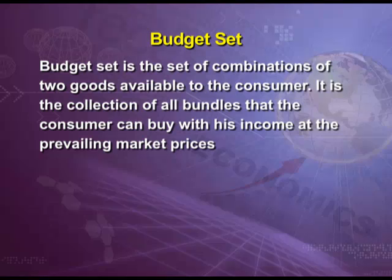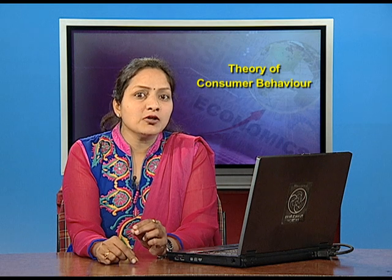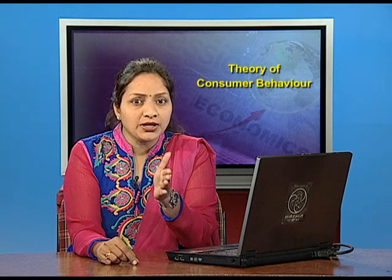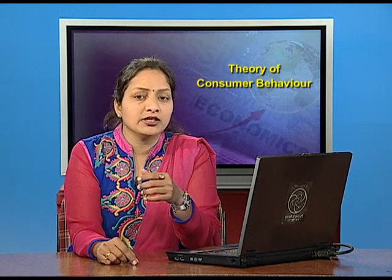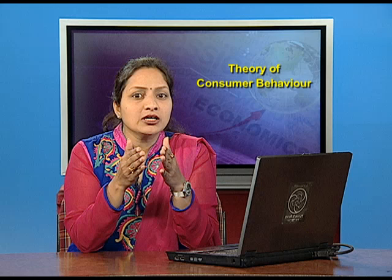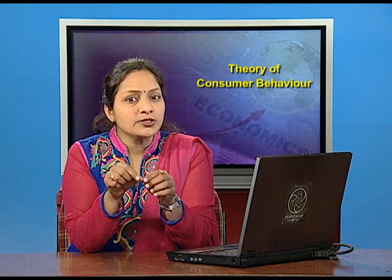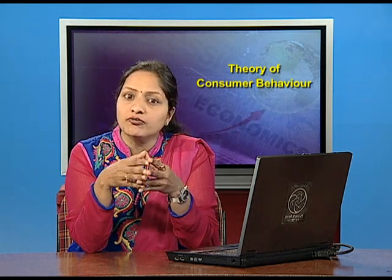Budget set is the set of combinations of two goods available to the consumer. It is the collection of all bundles that the consumer can buy with his income at the prevailing market prices. Suppose the income of the consumer is M and the prices of the two goods are P1 and P2 respectively. If the consumer wants to buy X units of good 1, then he has to spend P1 into X amount of money.